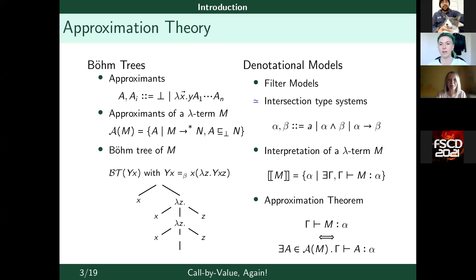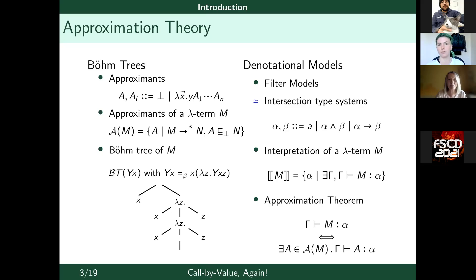Really well-known denotational models are filter models, created in the seventies. The idea is to have an intersection type assignment system — a set of rules to give types to terms — where the intersection operator is idempotent, associative, and commutative. We define the interpretation of a term as a set of types that can be assigned to it in different environments. A key result we want is an approximation theorem: if a term M has a type alpha in environment gamma, then M has an approximate A with the same type alpha in the same environment gamma. This means the interpretation of a term equals the union of the interpretations of its approximates.